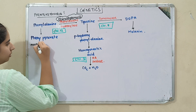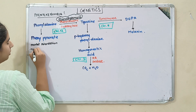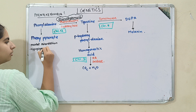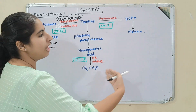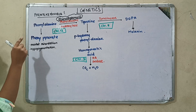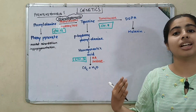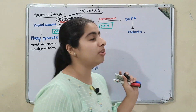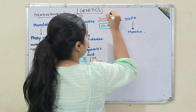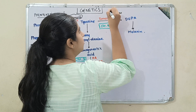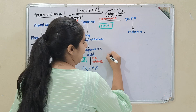The symptoms of phenylketonuria are: first, mental retardation, and second, hypopigmentation. Hypopigmentation occurs because melanin cannot be produced when the reaction is blocked. If tyrosinase is deficient, albinism results. If homogentisic acid oxidase is deficient, alkaptonuria results.